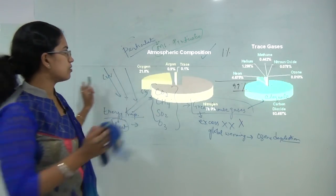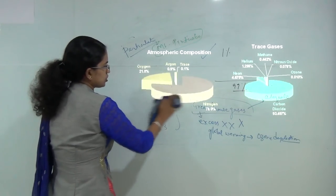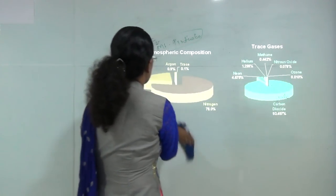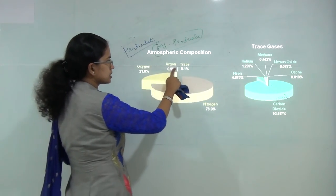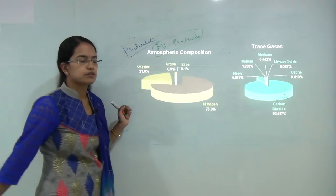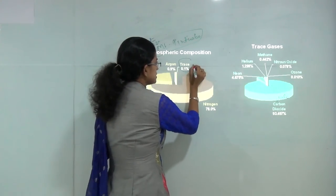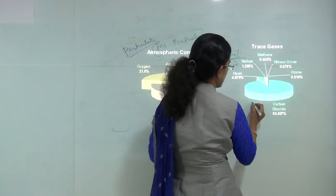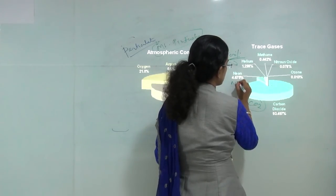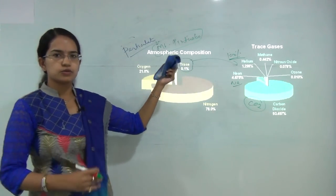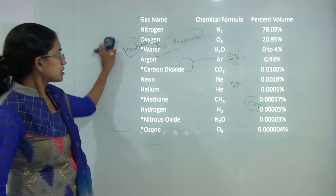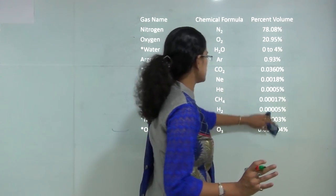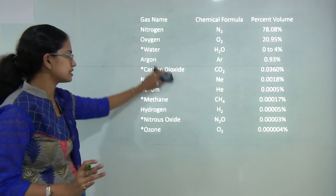If I talk about the composition, you can see this diagram. This pie chart shows nitrogen as the maximum among the constant gases, then oxygen contributing around 21%, argon, and a trace element of just 0.1%. If we consider that trace element as 100%, most of it would be carbon dioxide, then neon, helium, methane, nitrous oxide, and ozone as other trace gases.